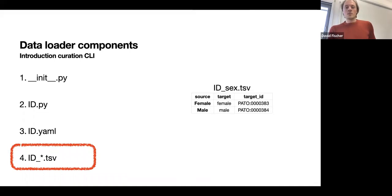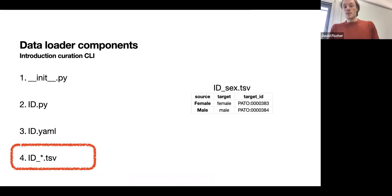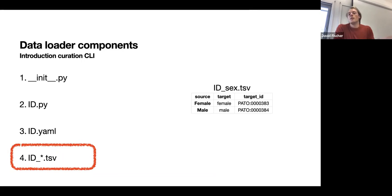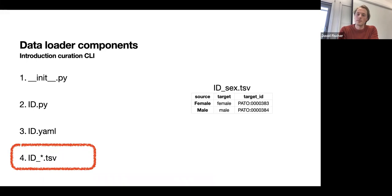Another example TSV is for sex metadata, where individuals were assigned 'Female' or 'Male' with capital letters in the dataset, but the PATO ontology defines them in lowercase. This is a very easy one to build — just map capitalized labels to their lowercase ontology equivalents with the corresponding ontology IDs.